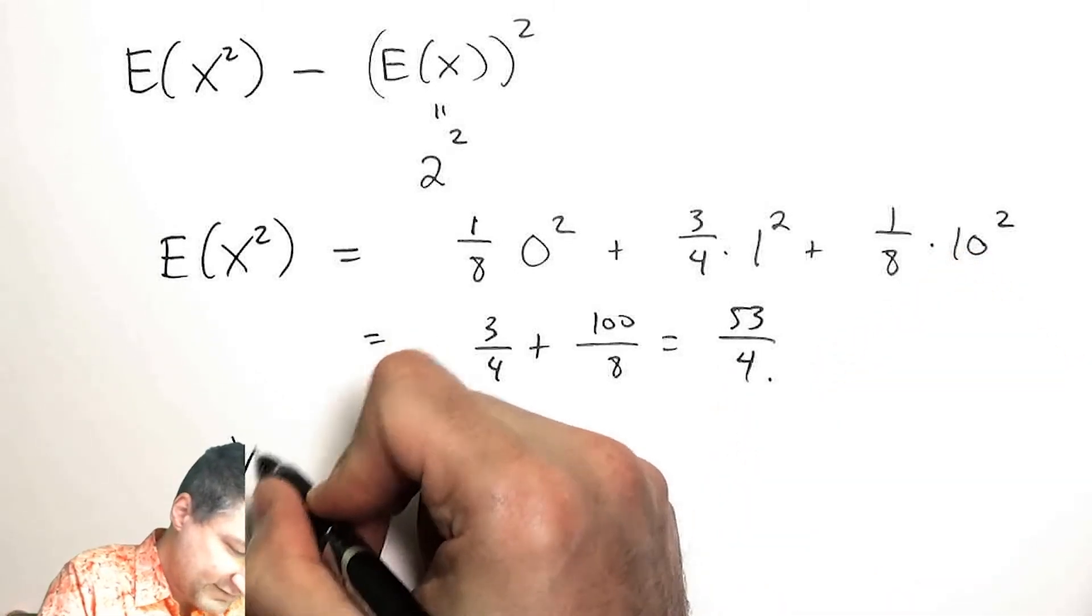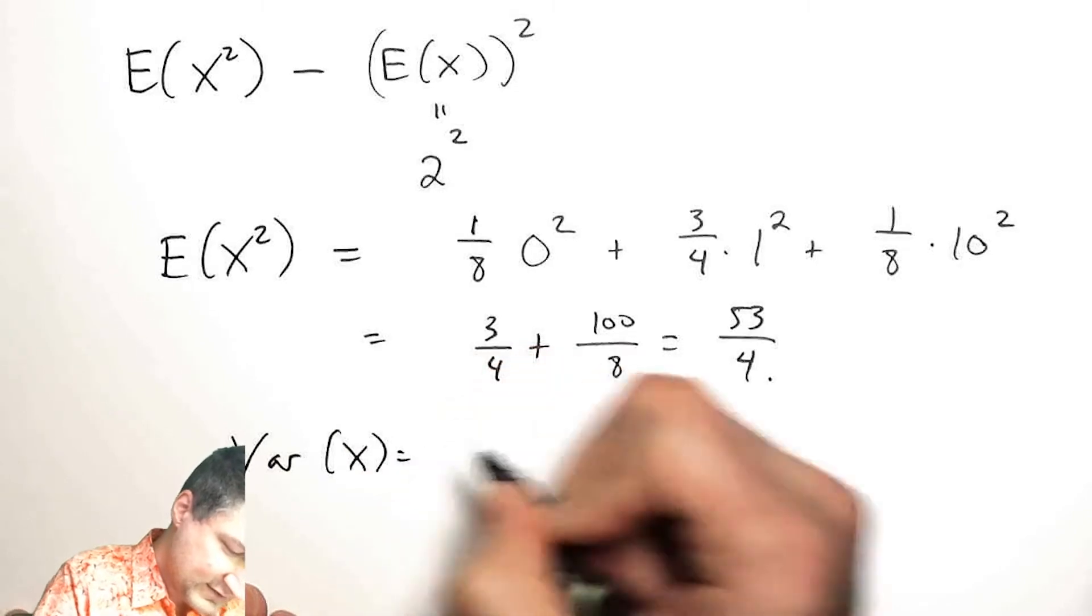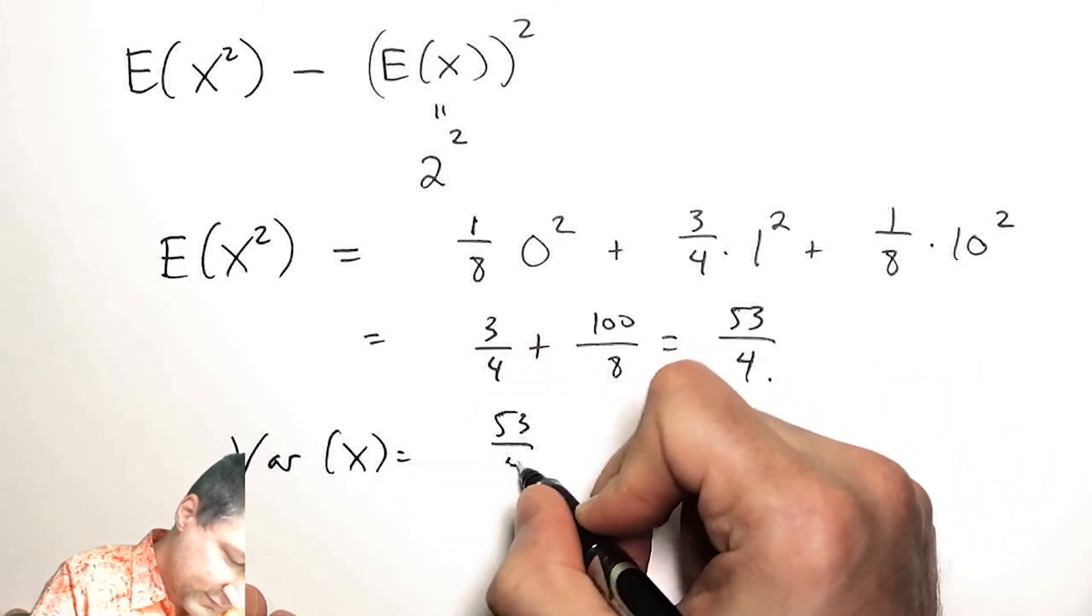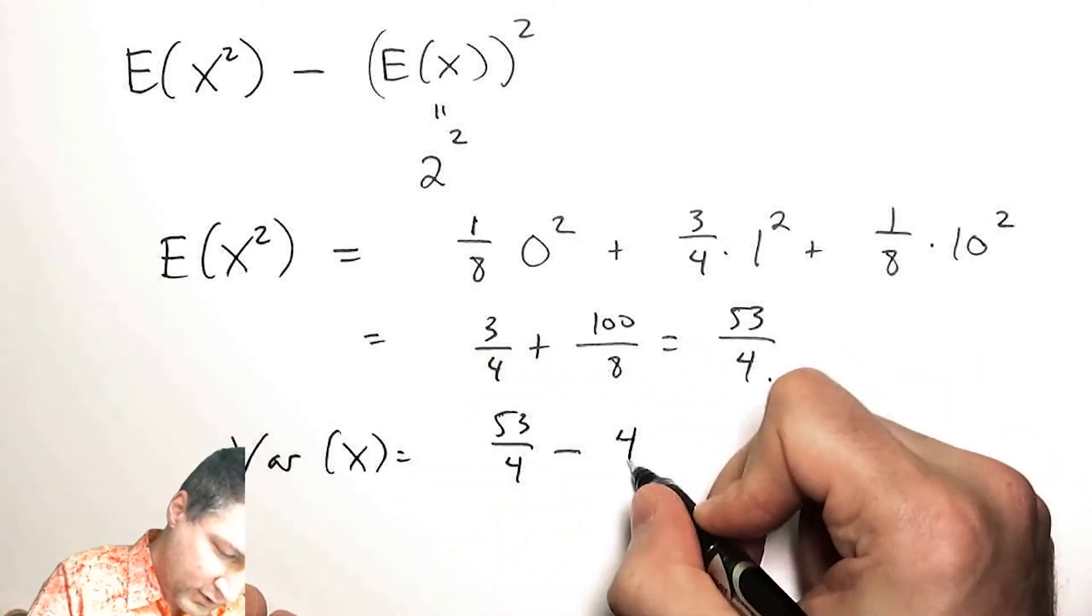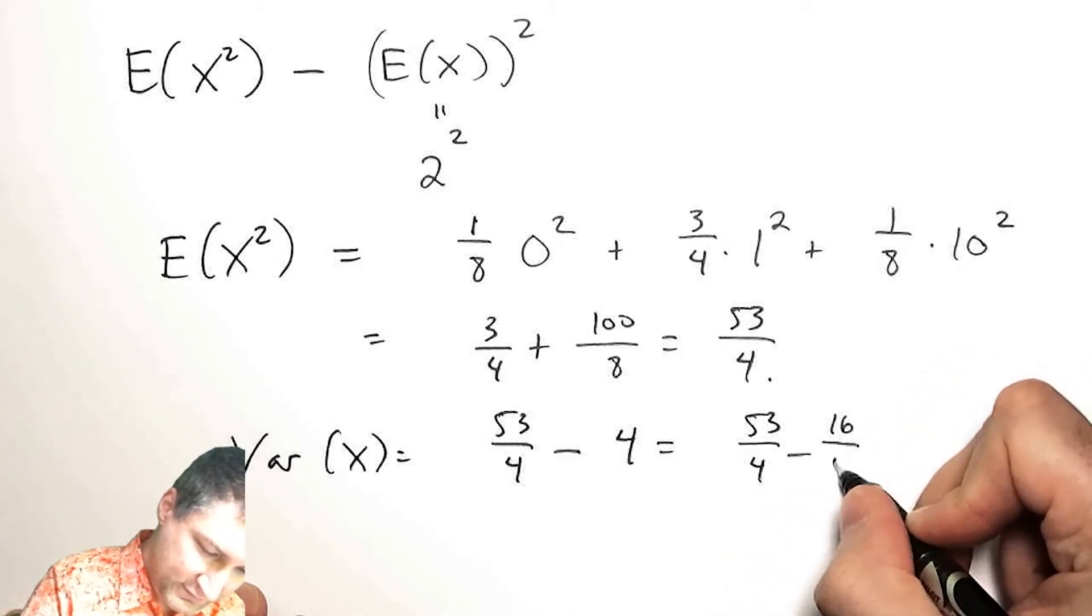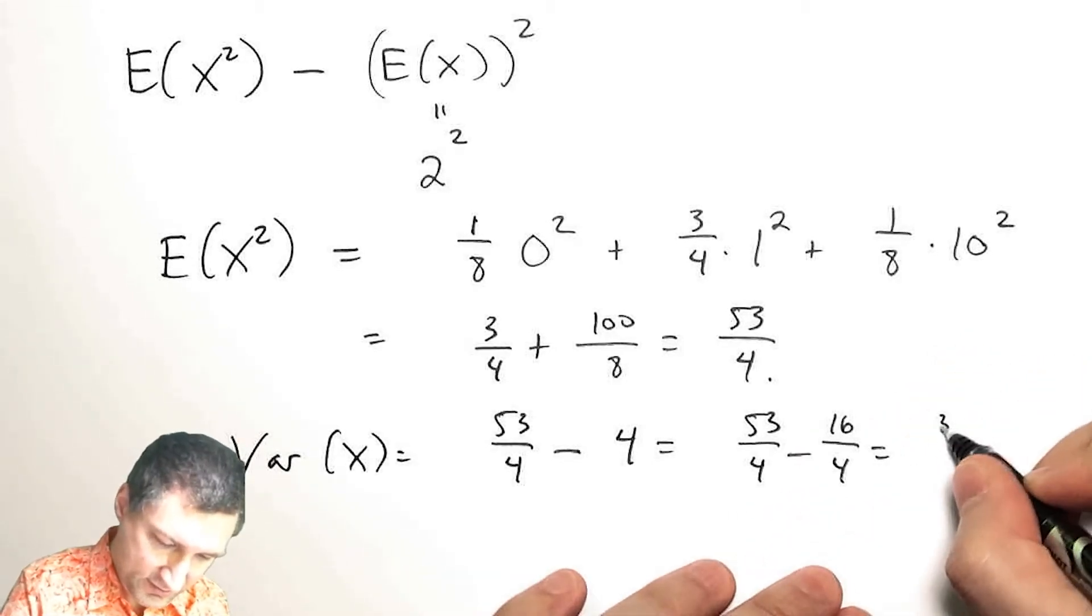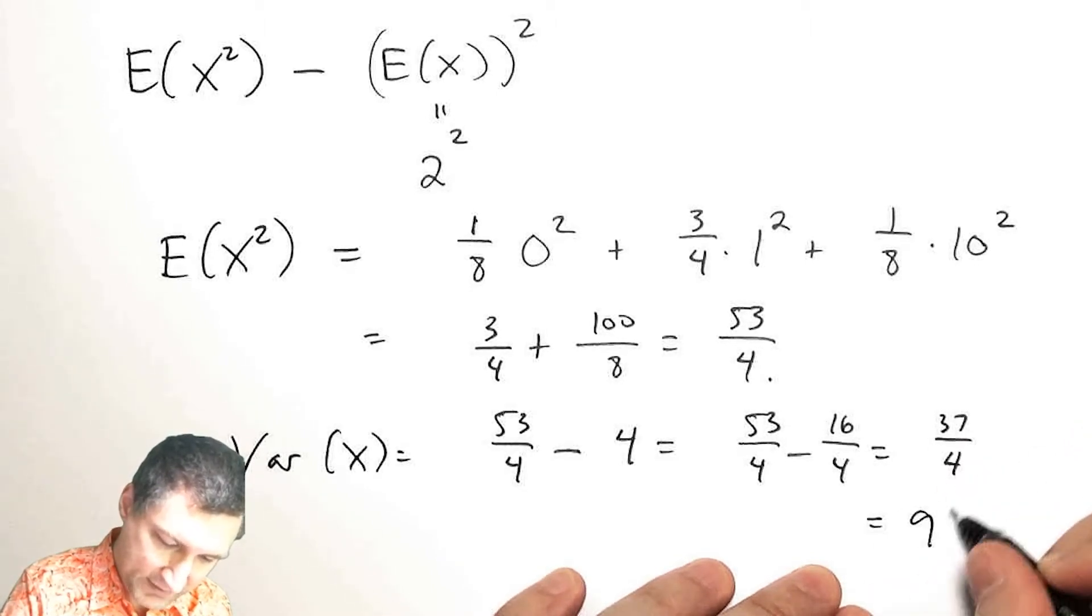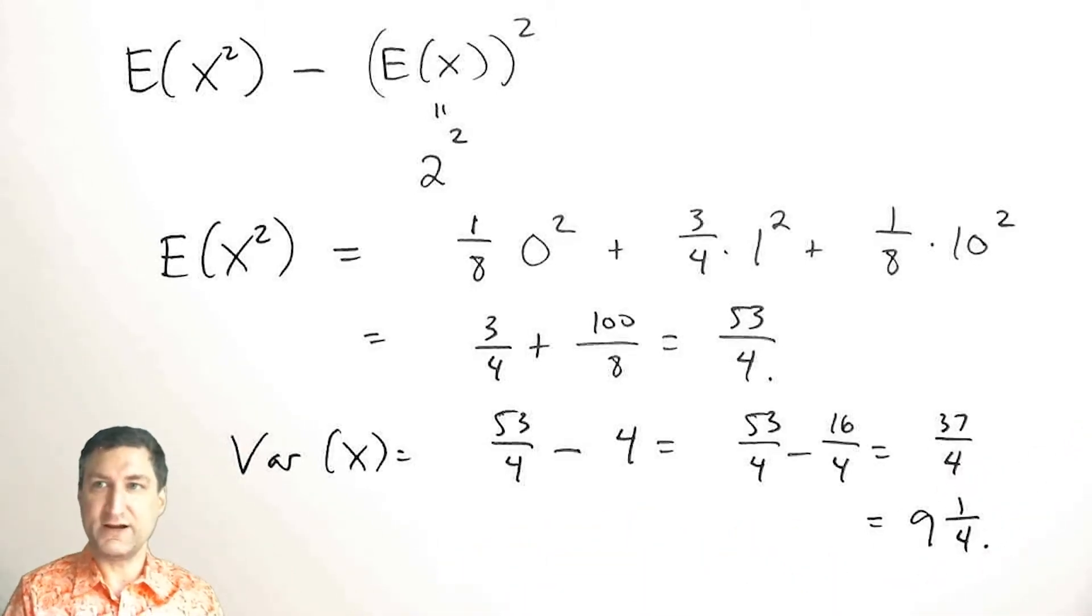And so that means that my variance of X is 53/4 minus 4, which is 53/4 minus 16/4, which is 37/4, which is the same 9 and a quarter that I got earlier.